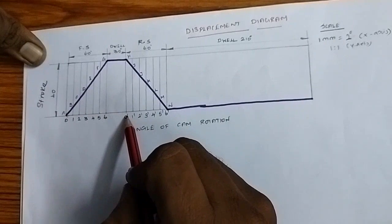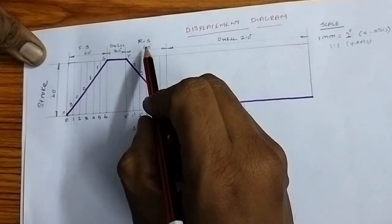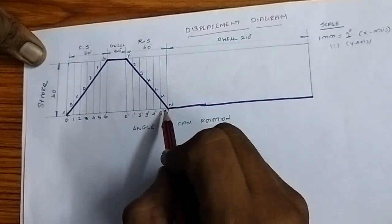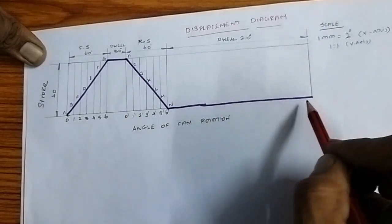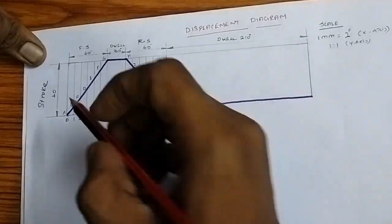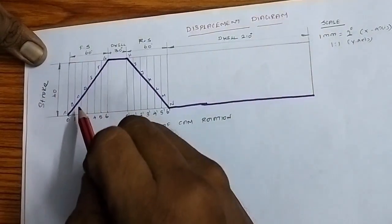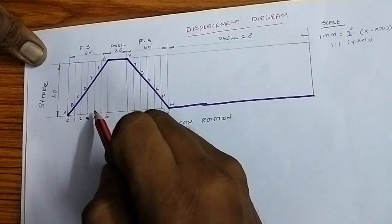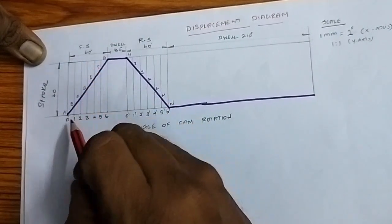The path goes from 0 to 6 for the forward stroke. Next, the return stroke is 60 degrees, from point 6 back down. The remaining period is the dwell. Now divide the forward stroke into 6 equal parts. Total forward stroke is 60 degrees divided by 6 equals 10 degrees per part.